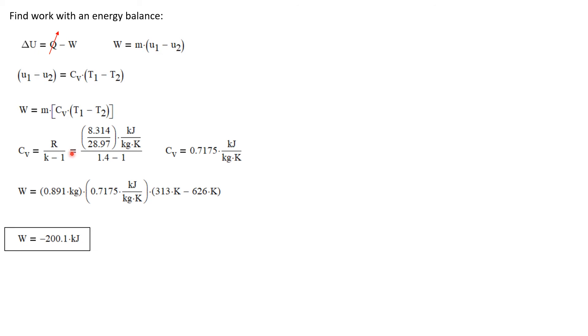We need C sub V. And we know that C sub V for an ideal gas is just R over K minus 1. Again, we have our gas constant R, which is the universal gas constant divided by the molecular weight. K is 1.4. And we calculate that C sub V is 0.7175 kilojoules per kilogram K.